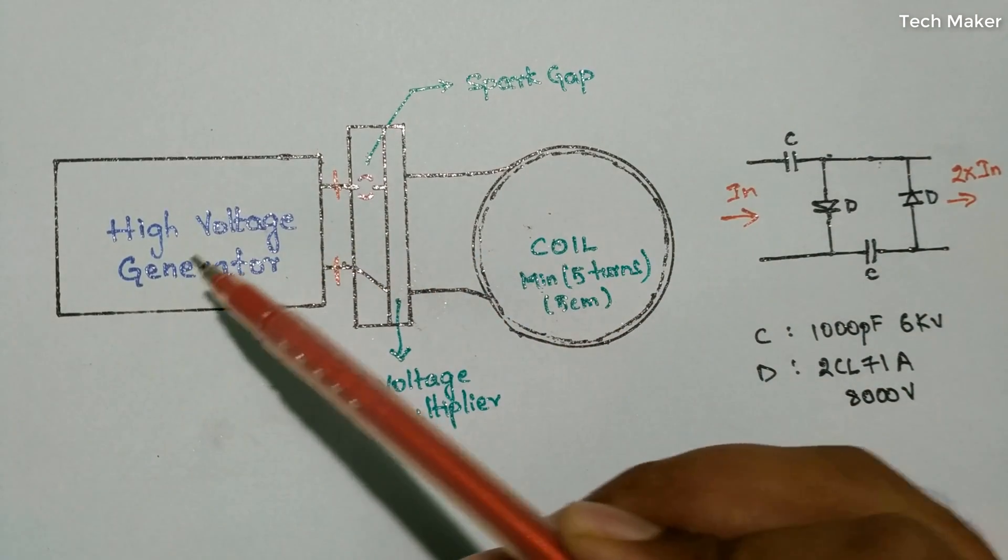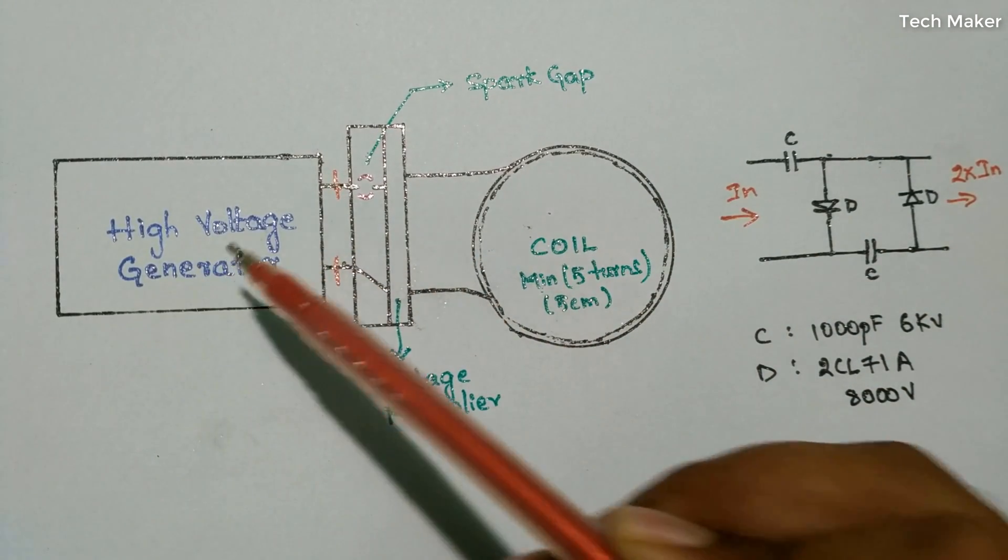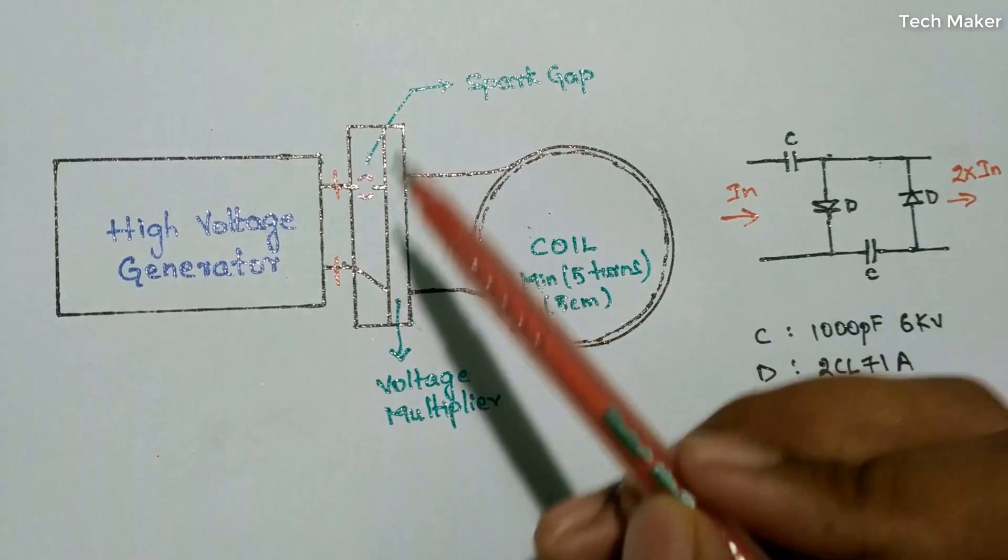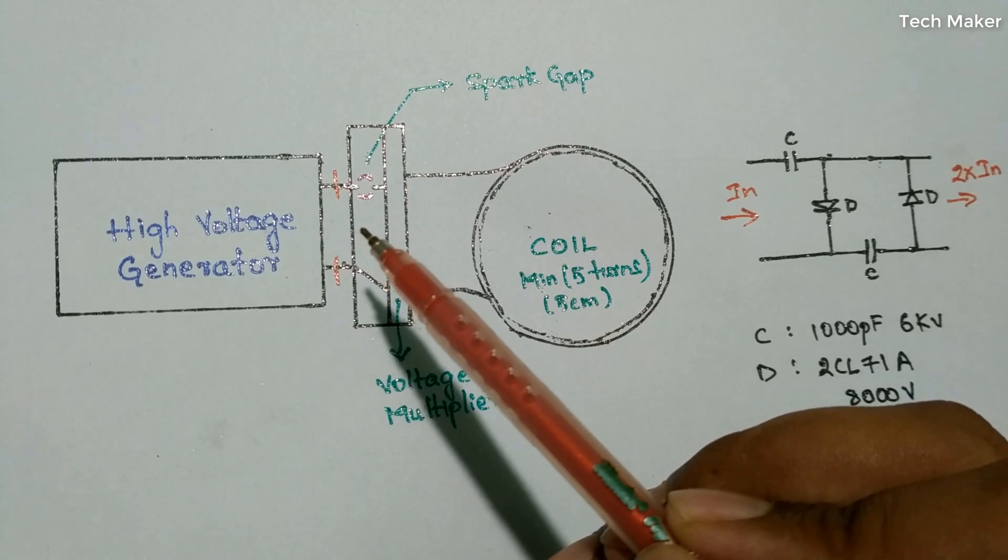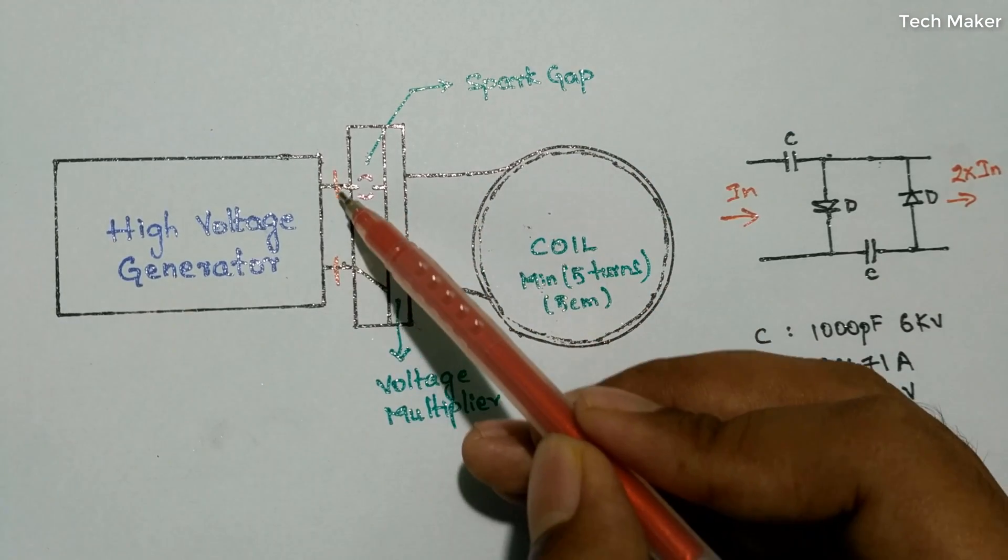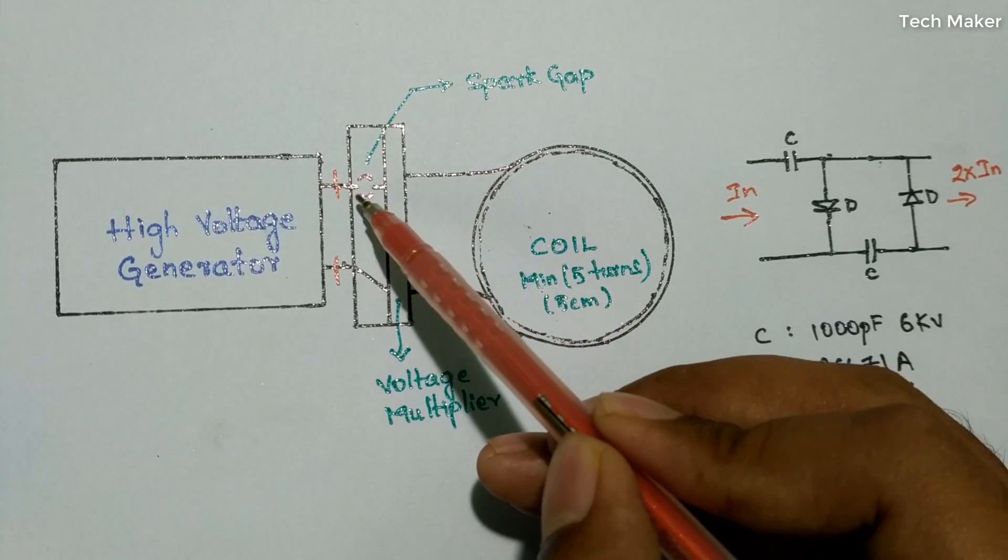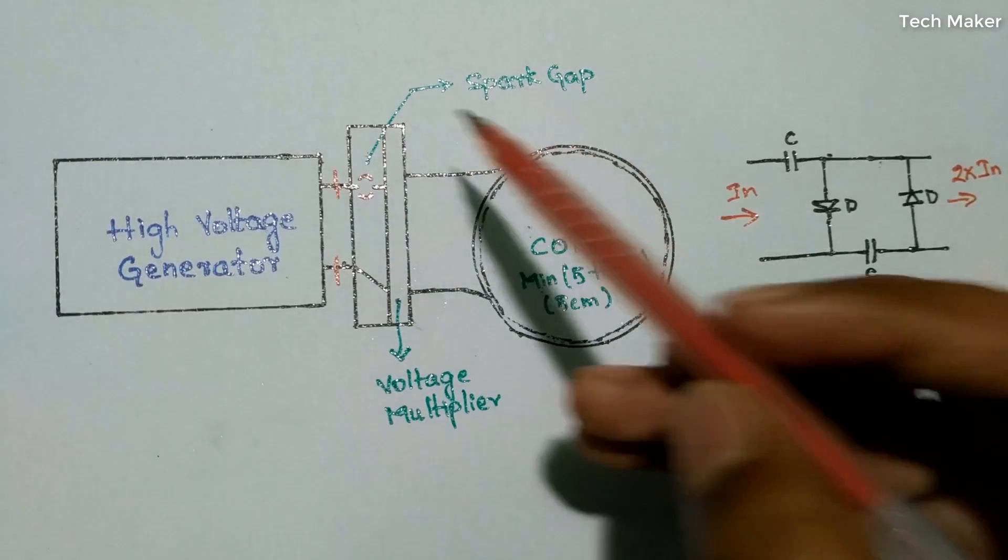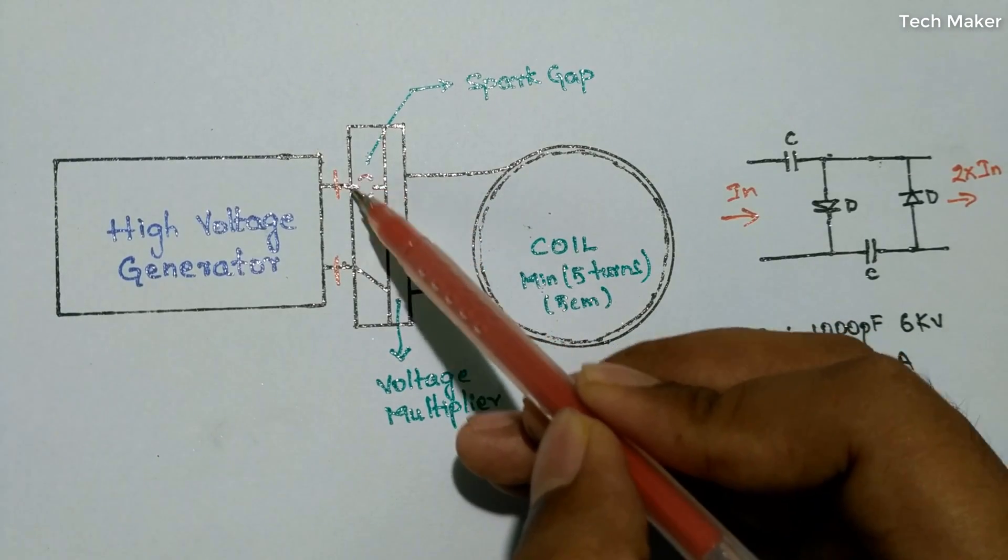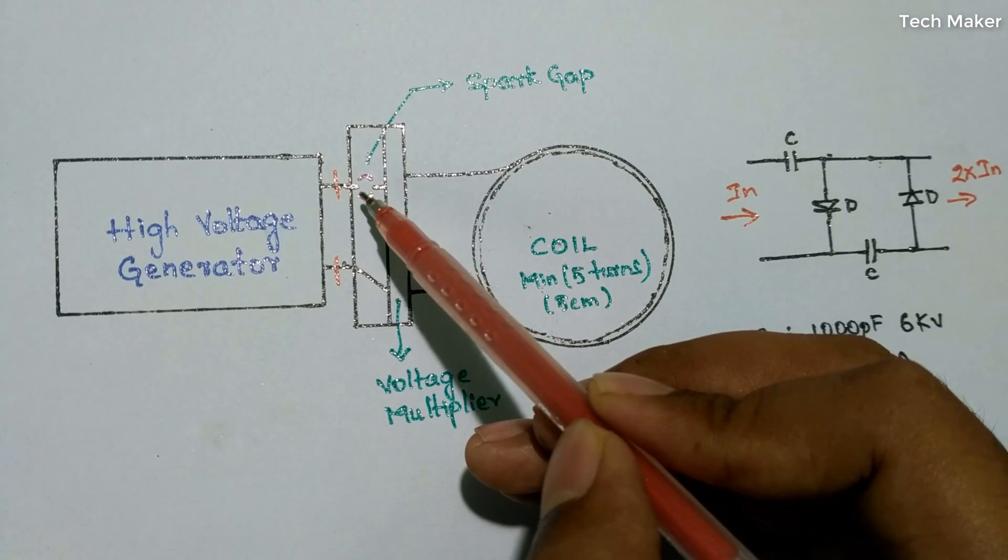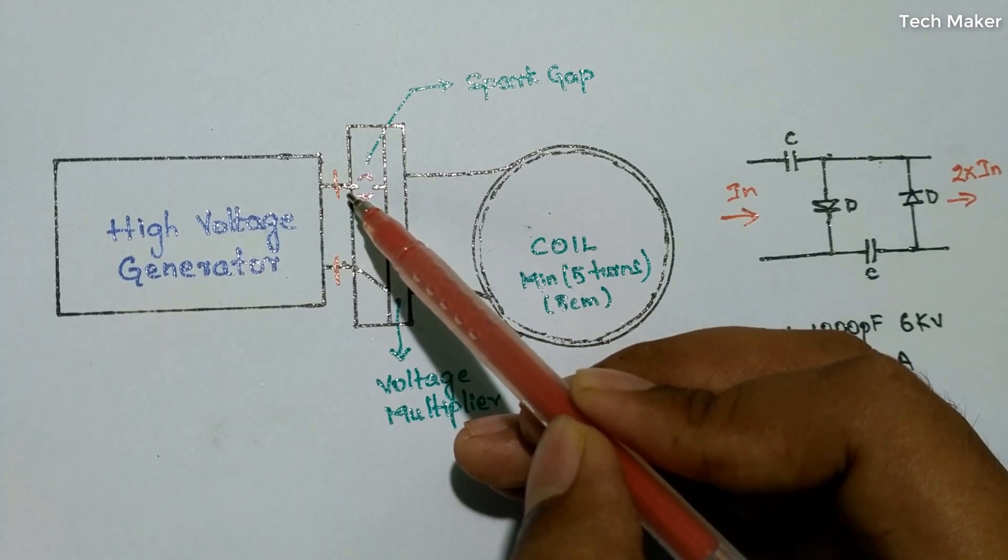Now you'll see the operation. When the high voltage generator generates the voltage, it's around 400 kilovolts. You will get 400 kilovolts of voltage here, and the current jumps to the spark gap. You can observe this spark here.